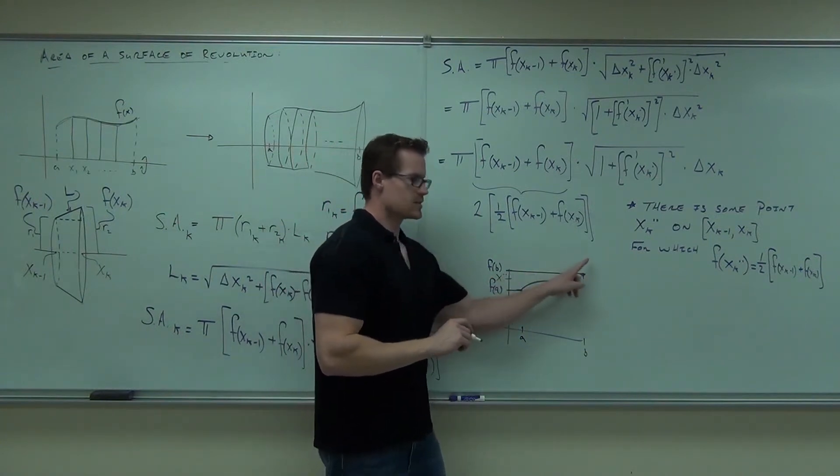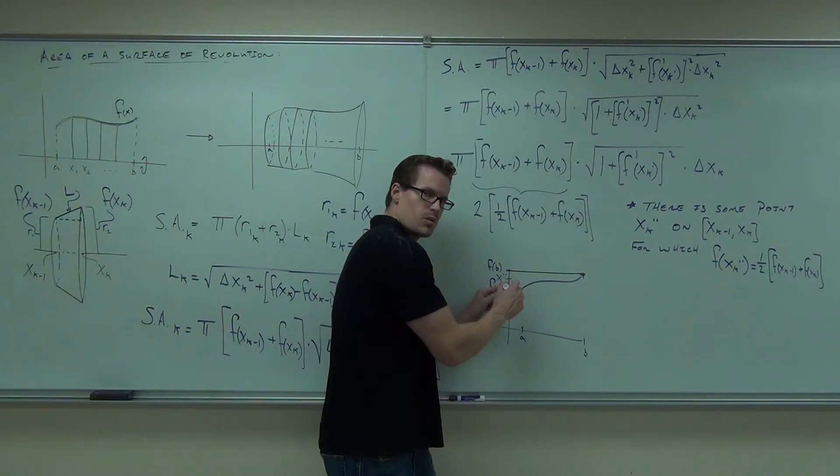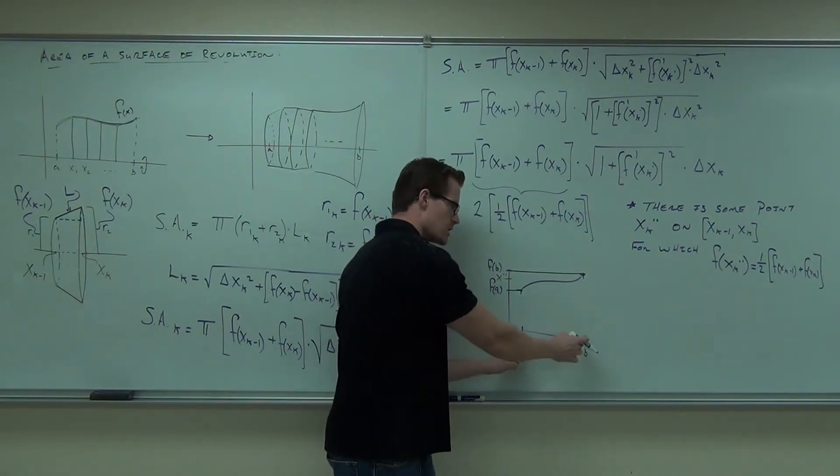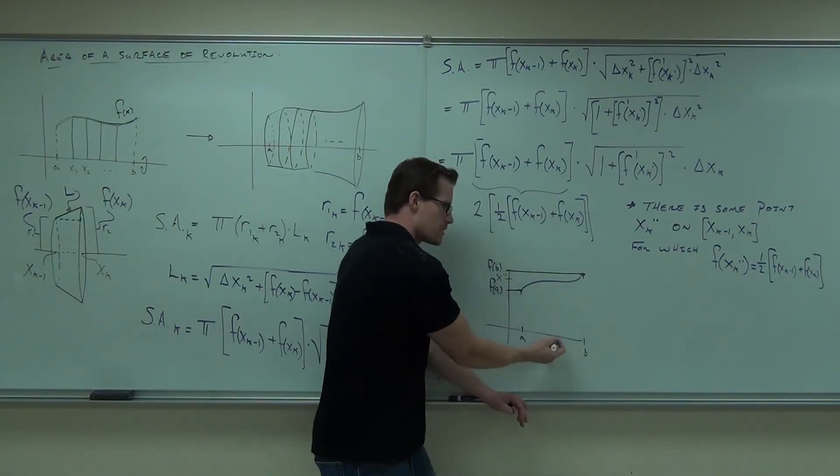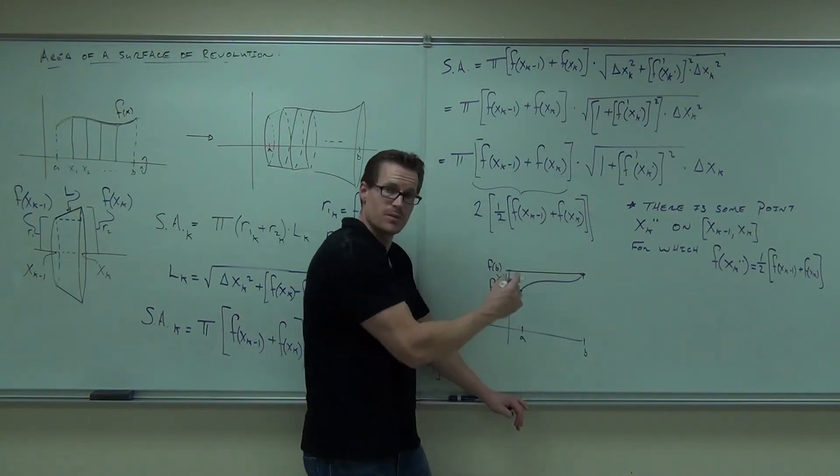It says, if f is continuous, then there must be some point, and it must be between here, so that when I plug this into my function, it gives me exactly this height. Let me show you.